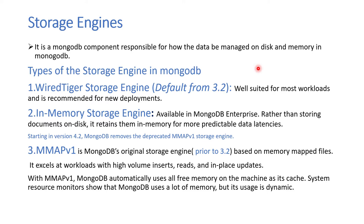There are two types of storage engines in MongoDB. The first is the WiredTiger storage engine, which is the default from version 3.2 — currently version 4.4. When you install the community version and don't know which storage engine to use, WiredTiger is well suited for most workloads, so that's the one to go with.